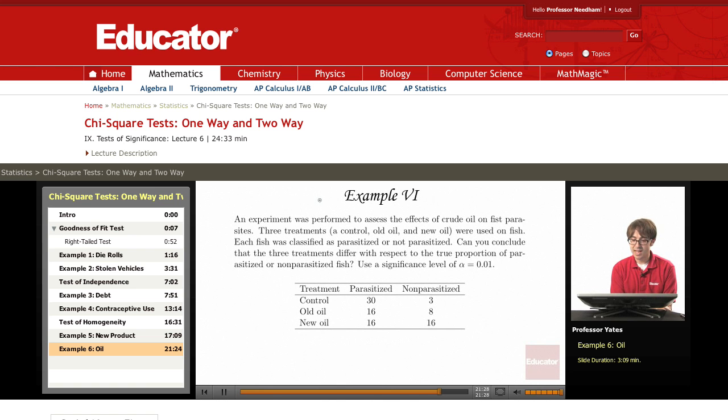An experiment was performed to assess the effects of crude oil on fish parasites. Three treatments that control some old oil and new oil were used on the fish. Each fish was classified as parasitized or not parasitized. Can you conclude that the three treatments differ with respect to the true proportion of parasitized or non-parasitized fish?